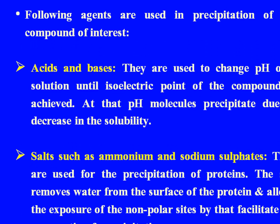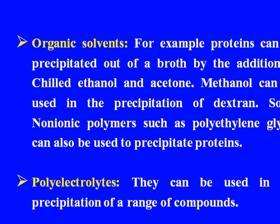There are a number of agents used in precipitation. First, acids and bases are used to change the pH of a solution until the isoelectric point of the compound is achieved; at that pH, molecules precipitate due to a decrease in solubility. Second, salts such as ammonium and sodium sulfate are used for precipitation of proteins specifically; the salt removes water from the surface of the protein and allows exposure of non-polar sites, facilitating aggregation and precipitation. Organic solvents — for example, proteins can be precipitated from a broth by addition of chilled ethanol and acetone.